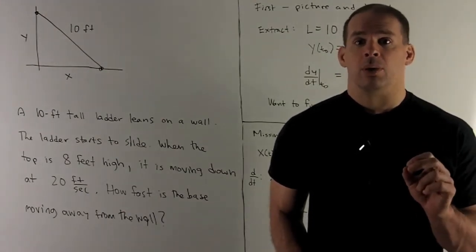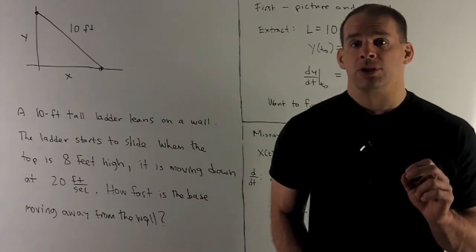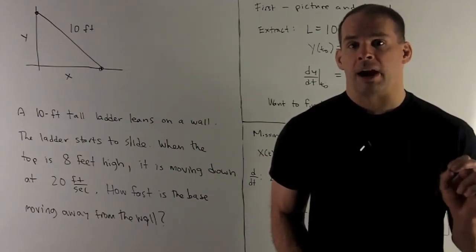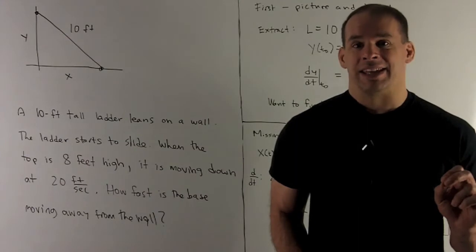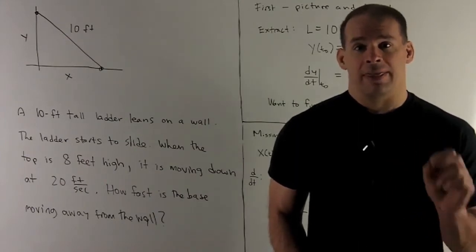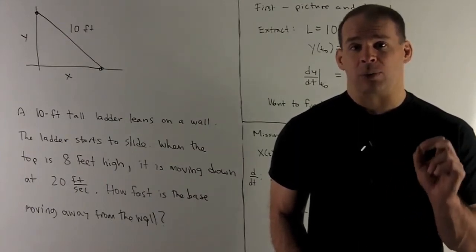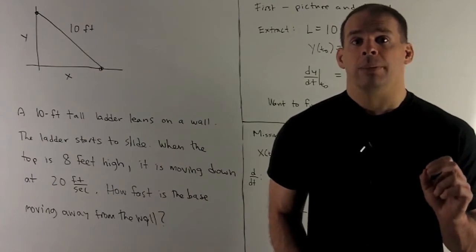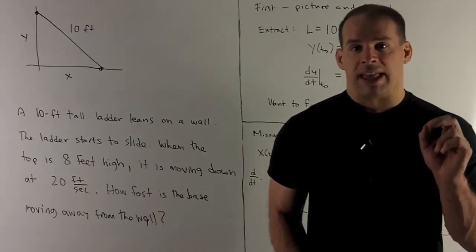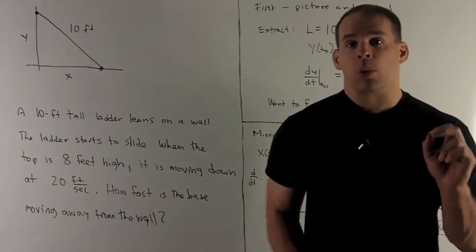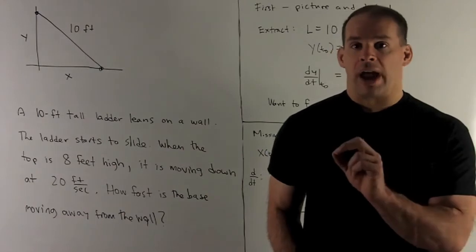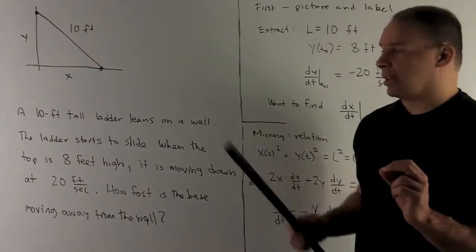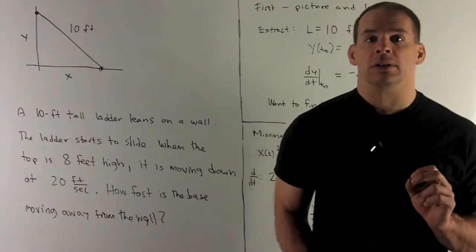We have a related rates problem. What I want to do first is go through the problem carefully, get an idea of what's going on, and then extract whatever information I can. I have a ladder leaning against the wall. We have the ground. When I draw the picture, it'll look something like this — a right triangle.